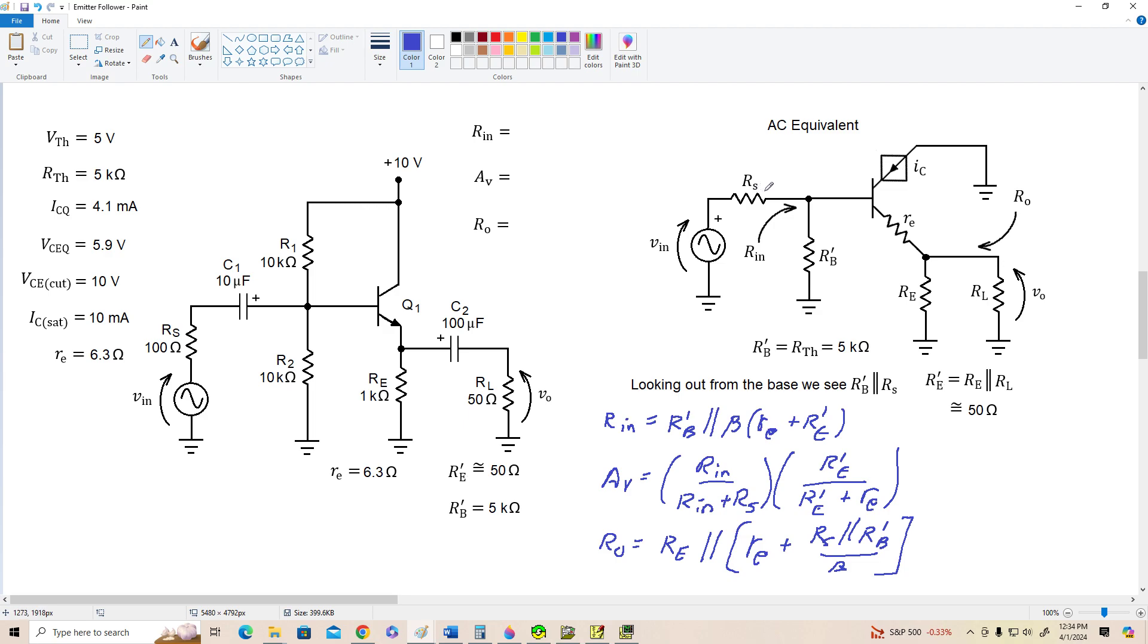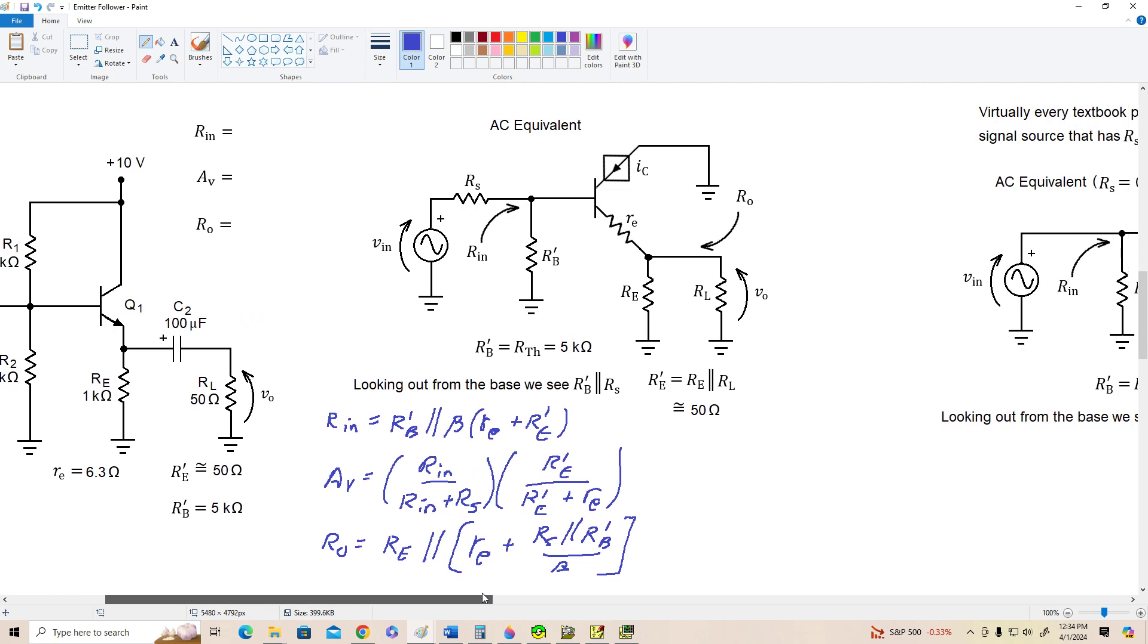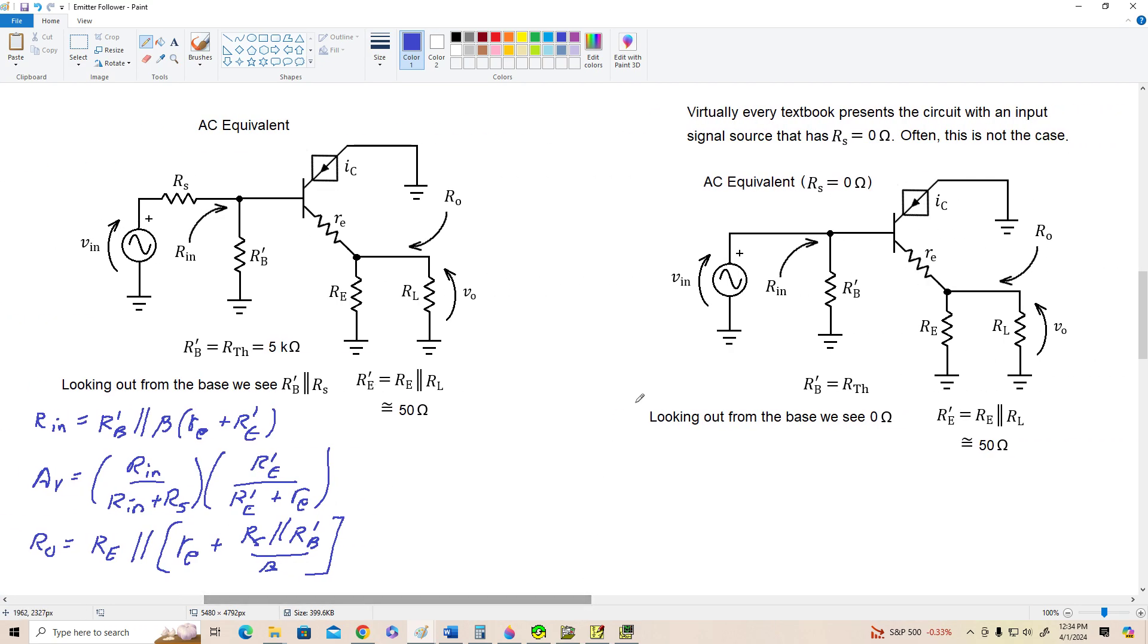But let's take a look at this amplifier in the case where RS equals zero. That's the way it's usually presented in all the textbooks. So let's take a look at that and see what we've got. Here's where the resistor RS used to be, and now let's determine our input resistance.